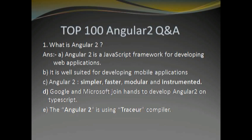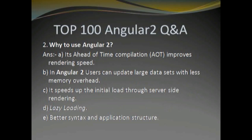The first question is: what is Angular 2? Angular 2 is a JavaScript framework for developing web applications. It is well suited for developing mobile applications. Angular 2 is simpler, faster, modular, and instrumented. Google and Microsoft joined hands to develop Angular 2 on TypeScript, and Angular 2 is using the Traceur compiler.